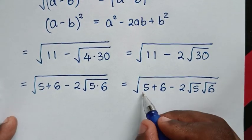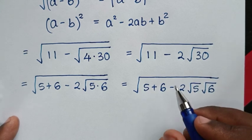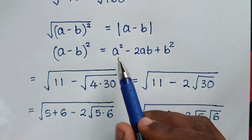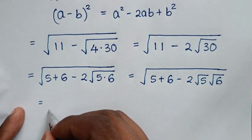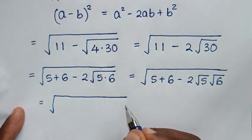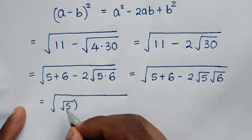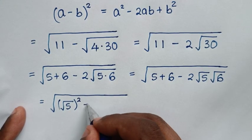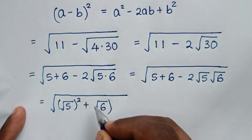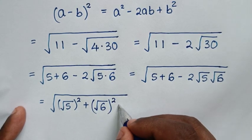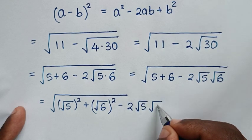Now inside the square root, we express 5 + 6 in terms of squares: 5 is (√5)² and 6 is (√6)². So the expression becomes √[(√5)² + (√6)² - 2·√5·√6].